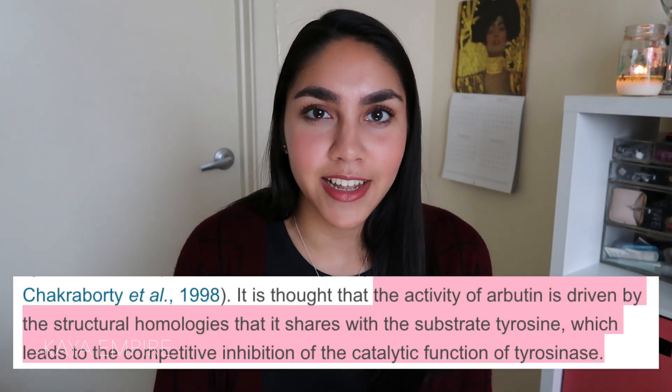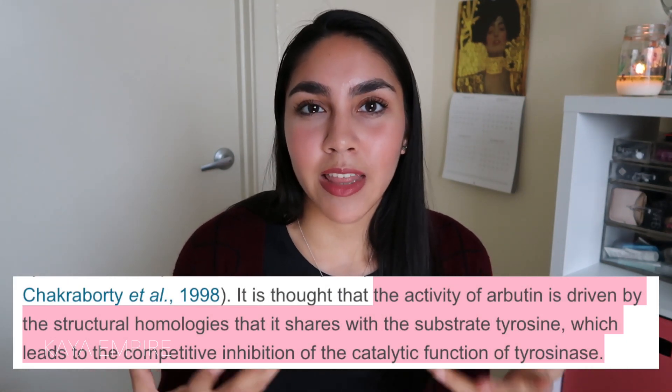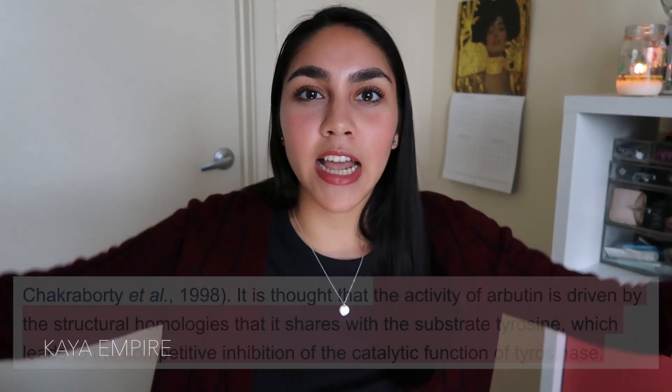The next ingredient is arbutin, which also messes with the active site of tyrosinase. But instead of interfering with copper ions, it actually binds to tyrosinase directly. Here's an analogy: pretend I'm tyrosinase and my arms are my active site — I'm trying to hug tyrosine to start the reaction to produce melanin. But arbutin walks by looking a lot like tyrosine, so I get confused and hug arbutin instead. Meanwhile tyrosine walks by and can't bind. So now instead of hugging tyrosine, I'm hugging arbutin and the reaction to produce melanin can't occur.